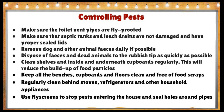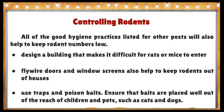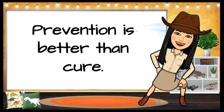Use fly screens to stop pests entering the house and seal holes around pipes. All good hygiene practices listed for other pests will also help to keep rodent numbers low. Design buildings to make it difficult for rats or mice to enter. Fly wire doors and window screens also help keep rodents out. Other methods of controlling rats and mice include using traps and poison baits — ensure baits are placed well out of the reach of children and pets.